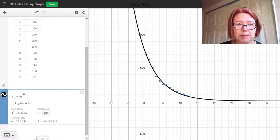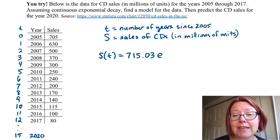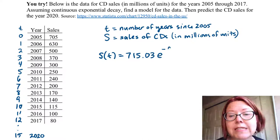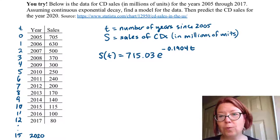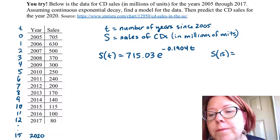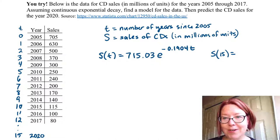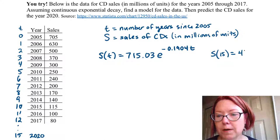I'm going to go ahead and write down this model: S(t) = 715.03·e^(−0.1904t). This uses all of the data with no forced initial value. If I find S(15) using this model, I find the CD sales in 2020 to be 41.11 million.